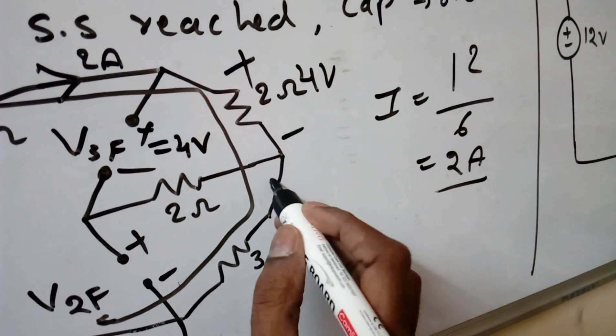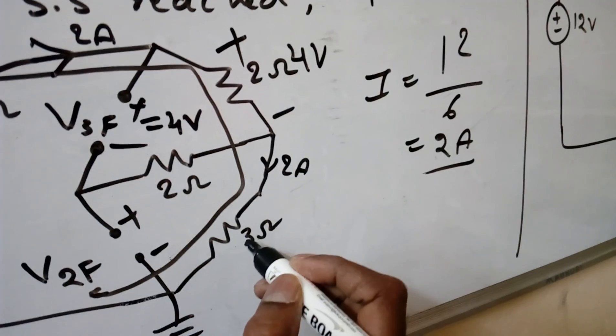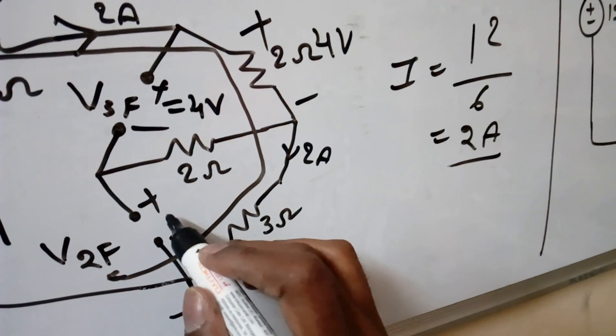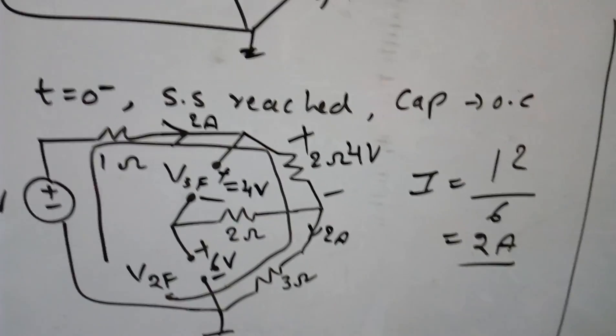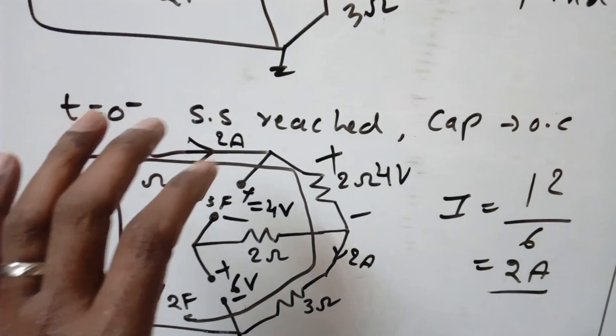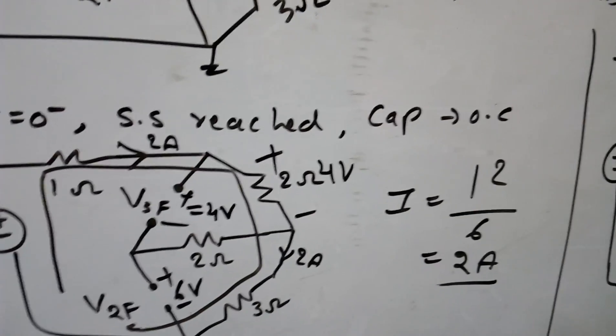Similarly this current is coming here, 2 ampere. So 2 into 3 is 6. So this is parallel because this current is 0. So it is nothing but 6 volts. So this is how to find V3F of 0 minus, V2F of 0 minus. So we found 4 volts and 6 volts.